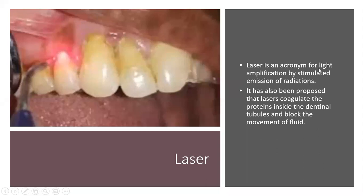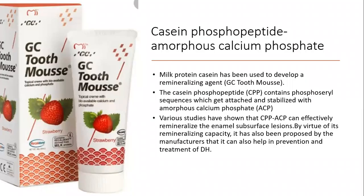Laser is an acronym for Light Amplification by Stimulated Emission of Radiation. It has been proposed that lasers coagulate the protein inside the dentinal tubules and block the movement of fluid. CPP-ACP (Casein Phosphopeptide and Amorphous Calcium Phosphate): the milk protein casein has been used to develop a remineralizing agent. The casein phosphopeptide contains phosphoserine sequences which stabilize Amorphous Calcium Phosphate, and various studies have shown CPP-ACP can effectively remineralize enamel subsurface lesions and may also help prevent and treat dentinal hypersensitivity.